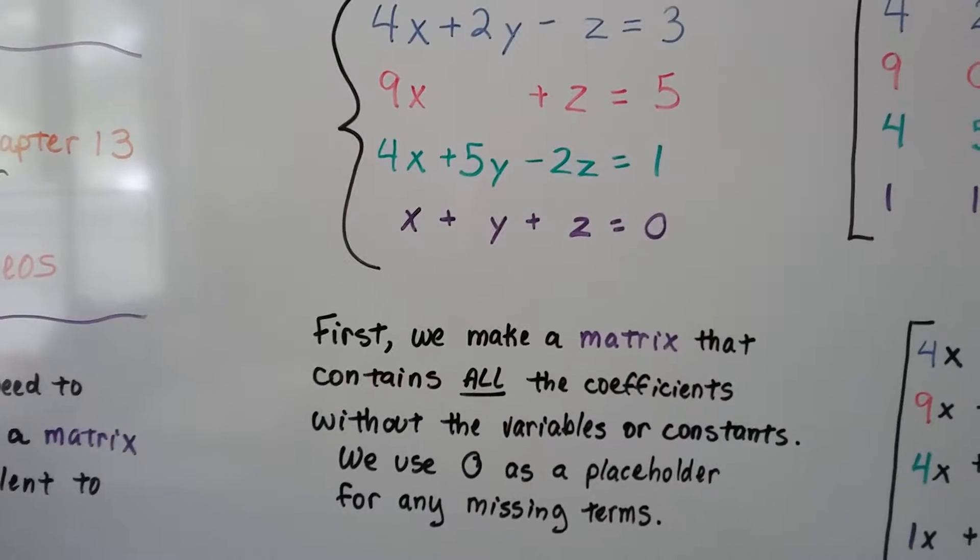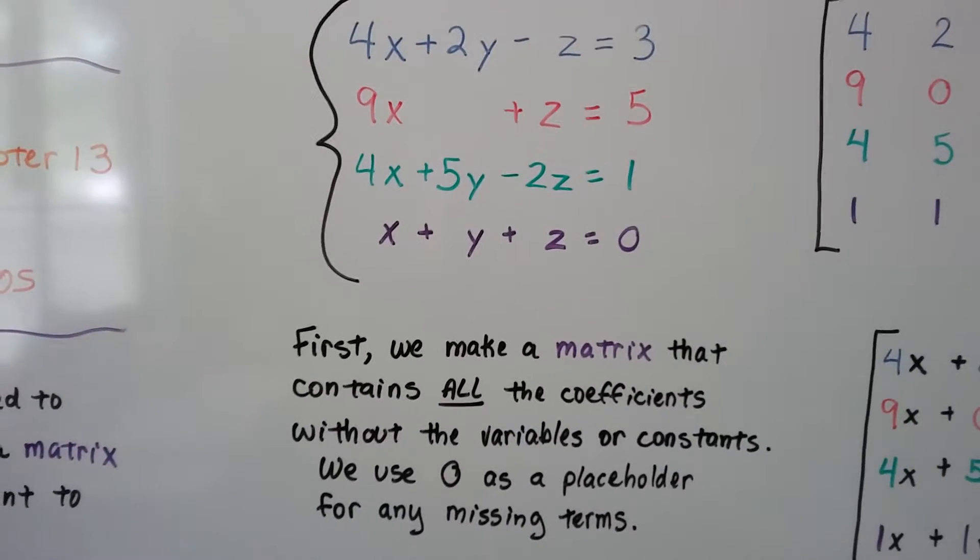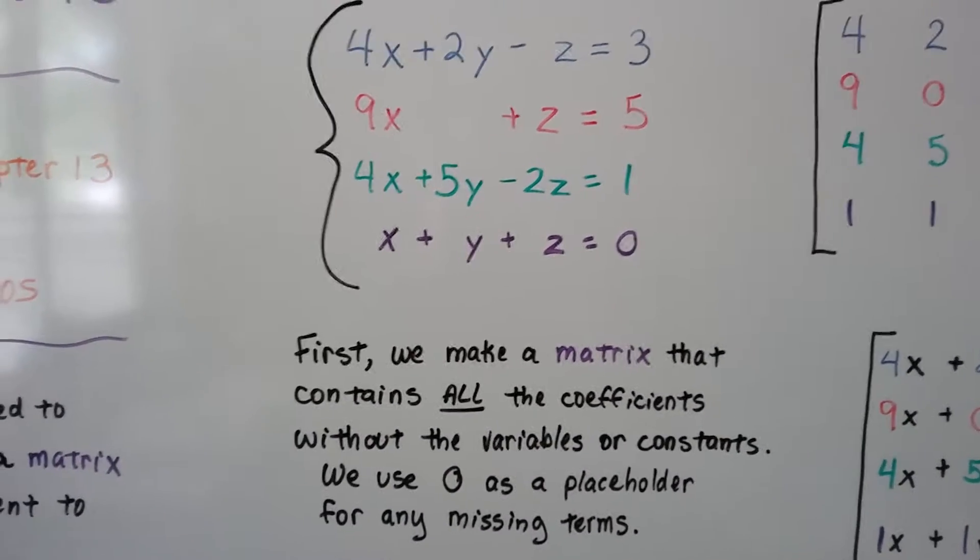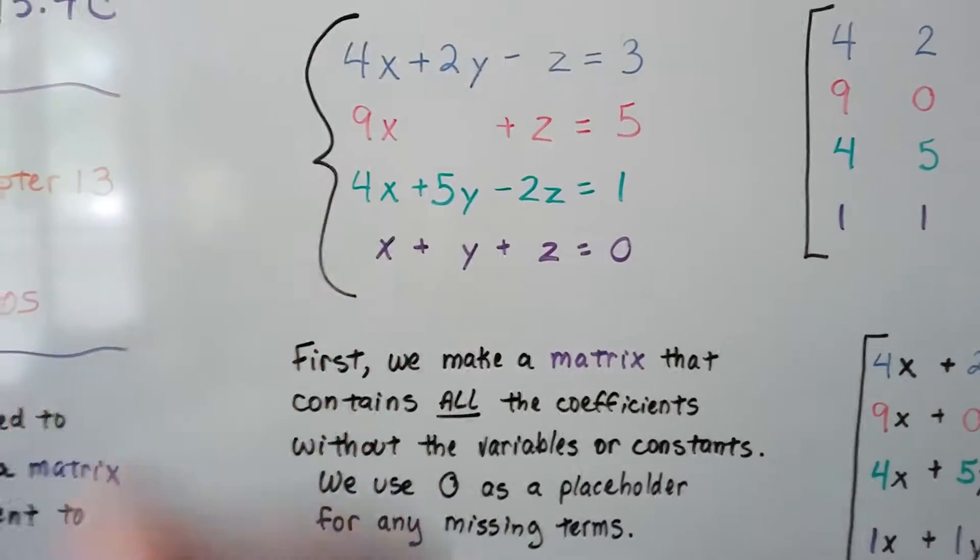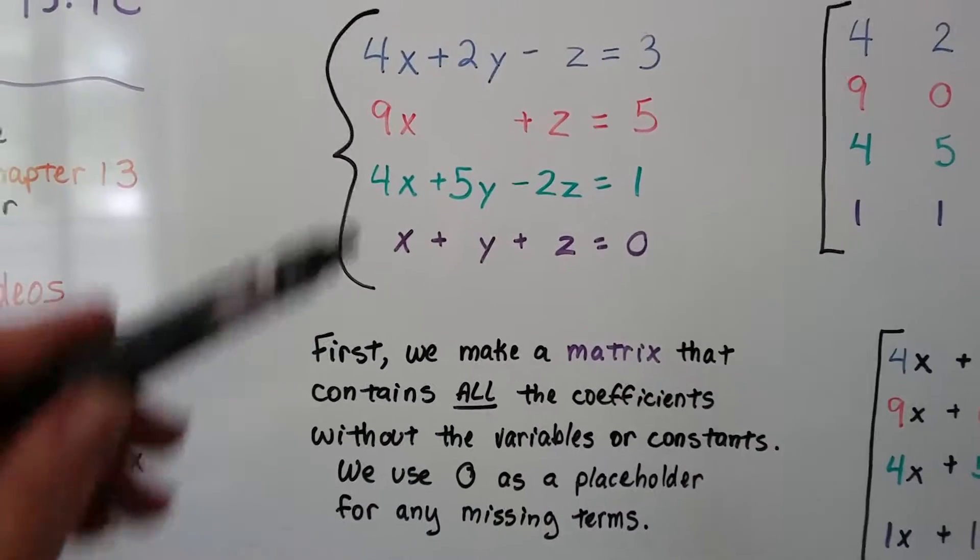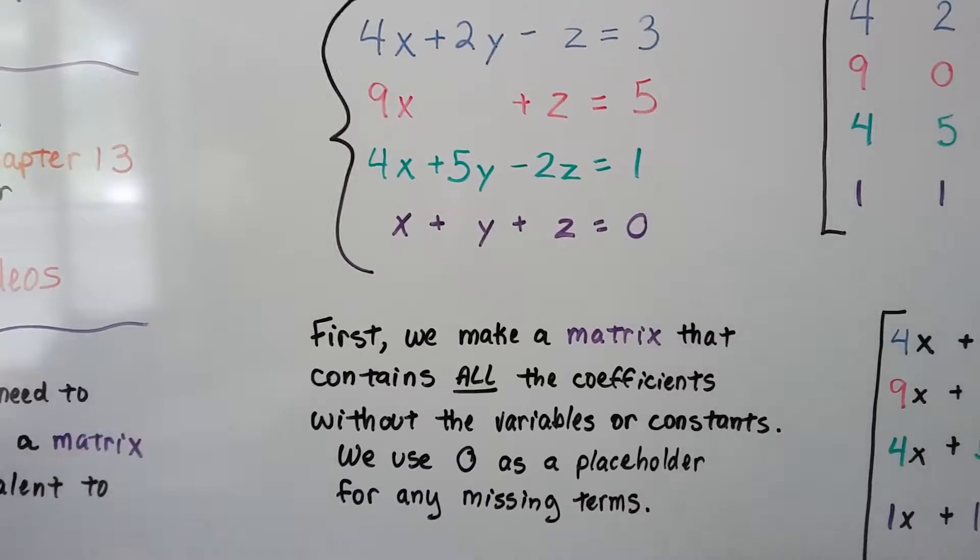So the first thing we do is make a matrix that contains all the coefficients without the variables or the constants. The constants are after the equal sign. We use a zero as a placeholder for the missing terms.